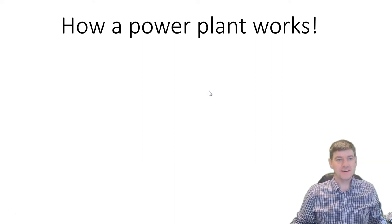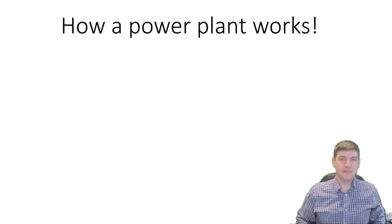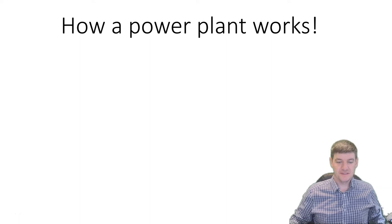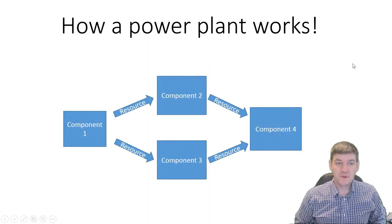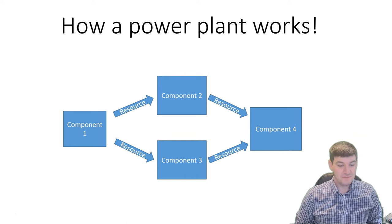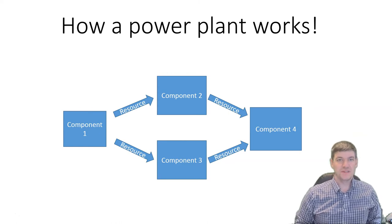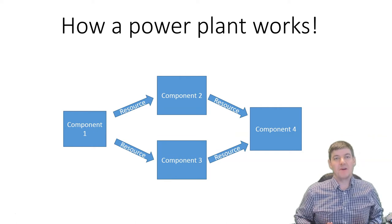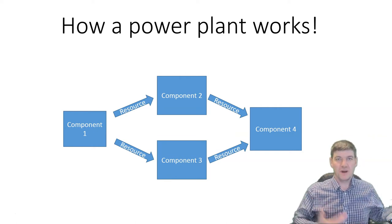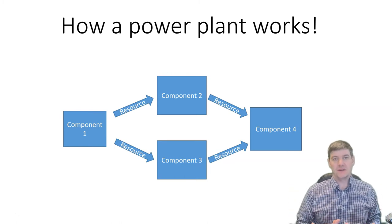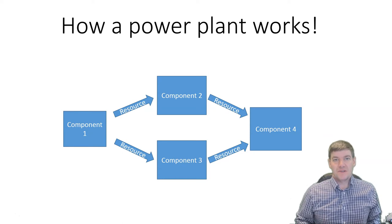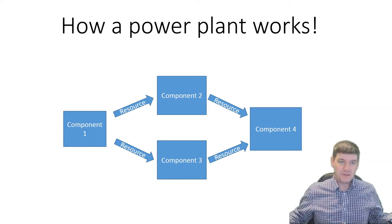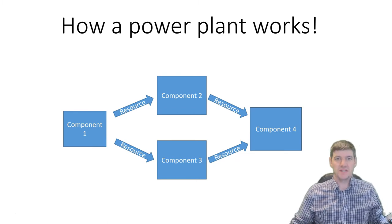Hi, today I have an extra special treat for you. I'm going to tell you all the secrets about how a power plant works, and we'll make use of it in our simulation class. Here's how a power plant works: we take some components, they provide some resources to us, and we use those resources in different components. All we're doing inside a power plant is taking some raw products, creating inputs to some device, and that device creates outputs somewhere else. Every time we do that, we're basically moving energy from one place to another. And that's how a power plant works.